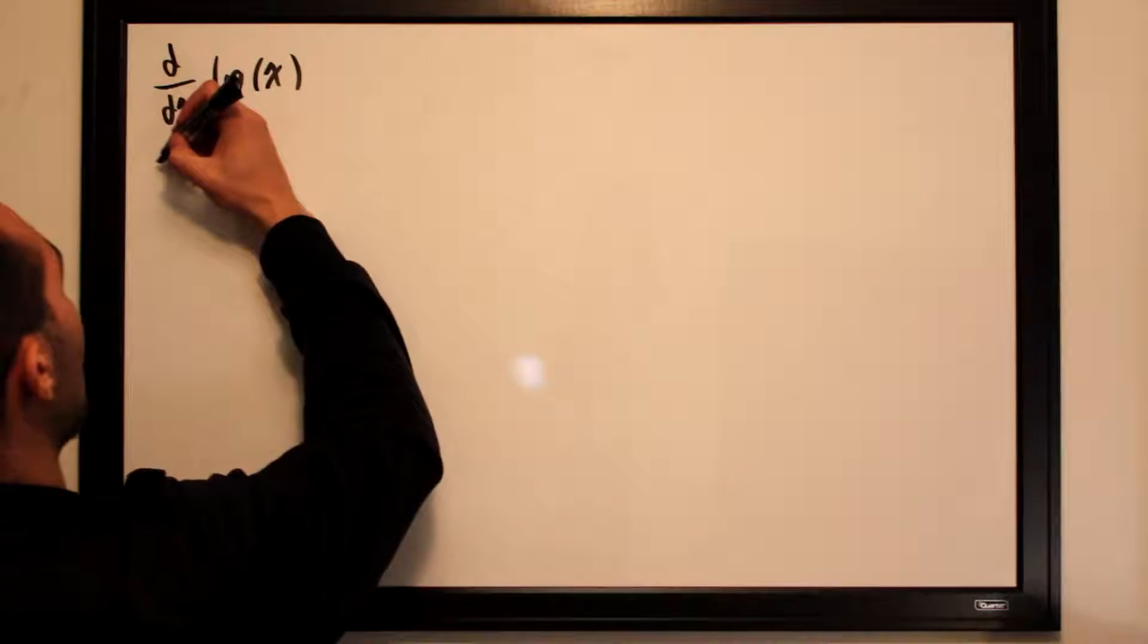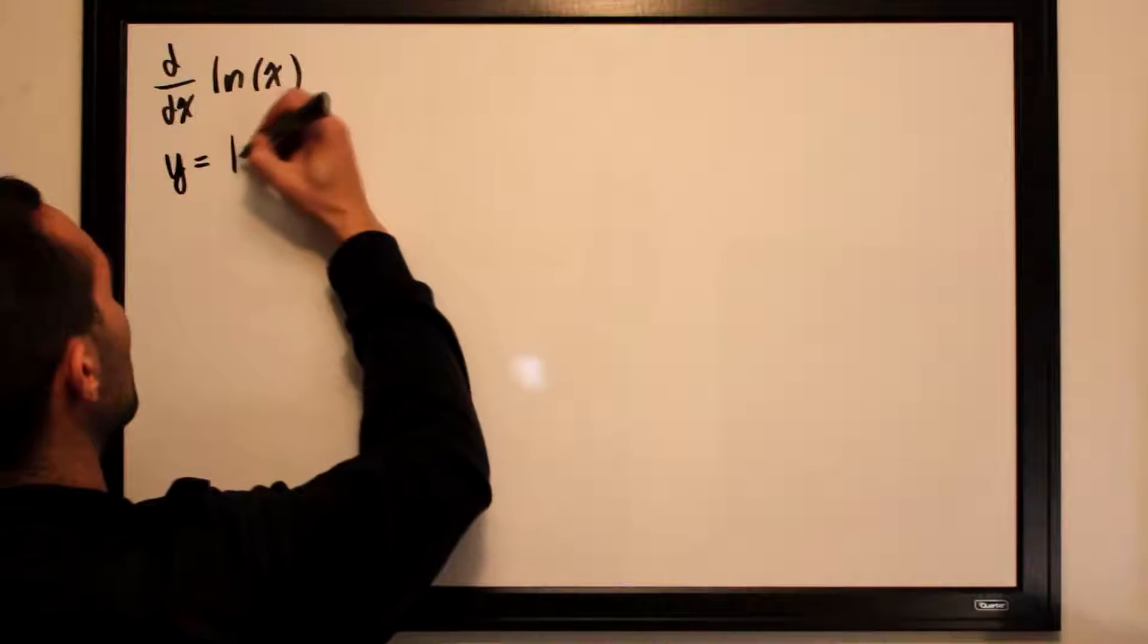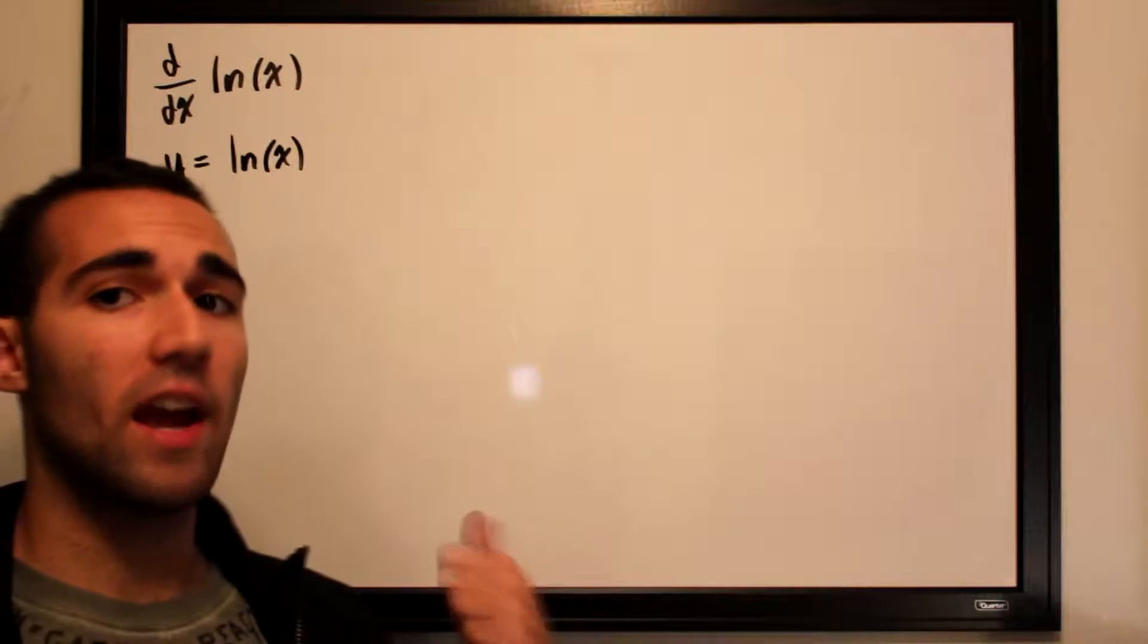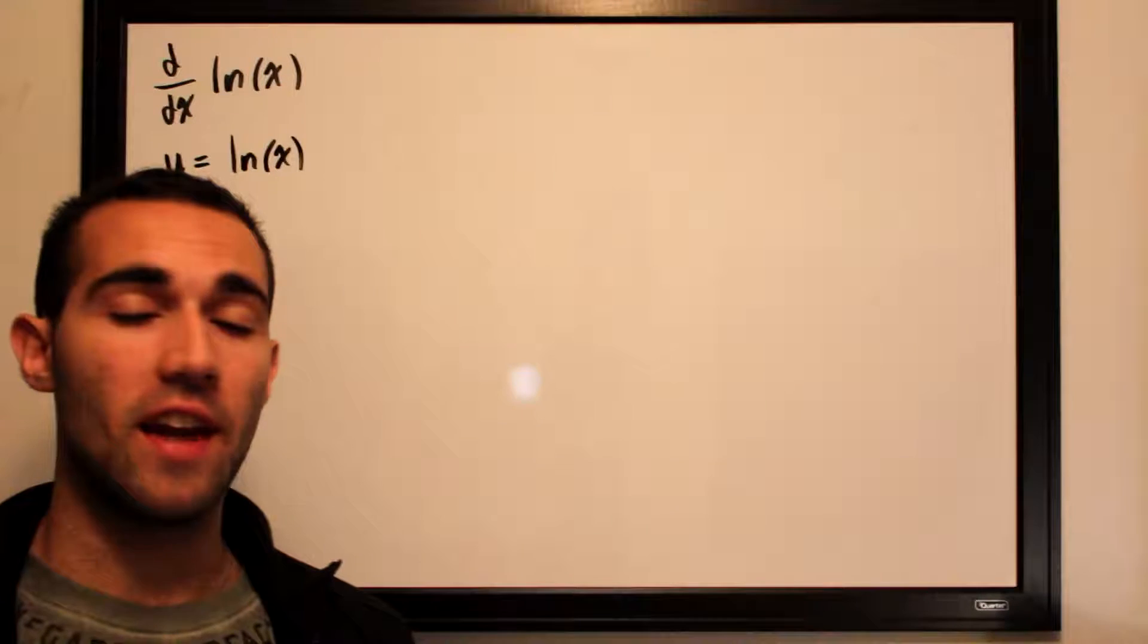First what we want to do is set our function y is equal to ln of x. Now what we want to do is get rid of the ln, that way we can isolate x.